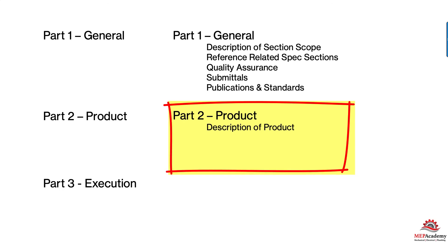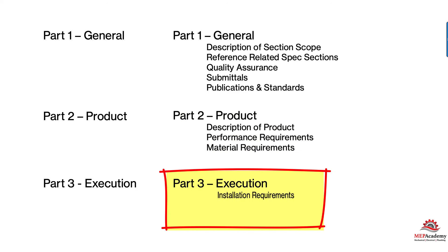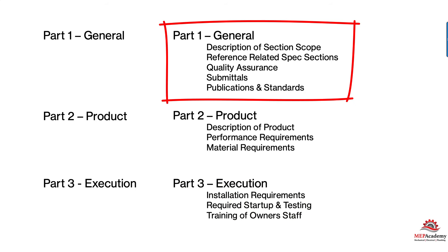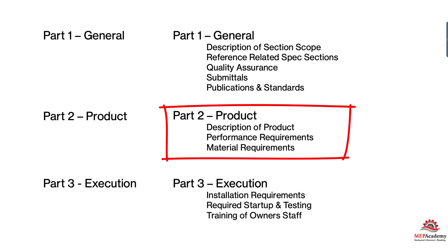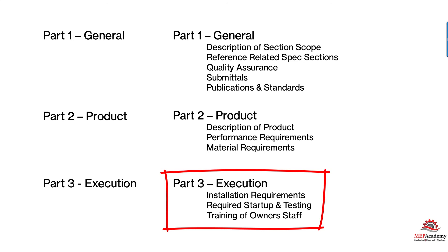Part 2 is Products — it describes the product and its performance requirements, material requirements, and standards. This is where the meat of the spec will be. Part 3 is Execution — installation requirements, fabrication, startup and testing, and training of the owner's staff. So Part 1 is an overall description referencing standards and publications. Part 2 describes what the product must do and what it's made of. And Part 3 is about how to install it, start it up, test it, and train the owner. These are the same in every section of the spec.